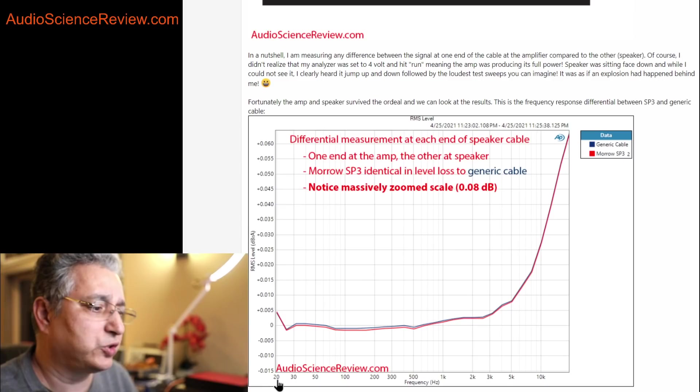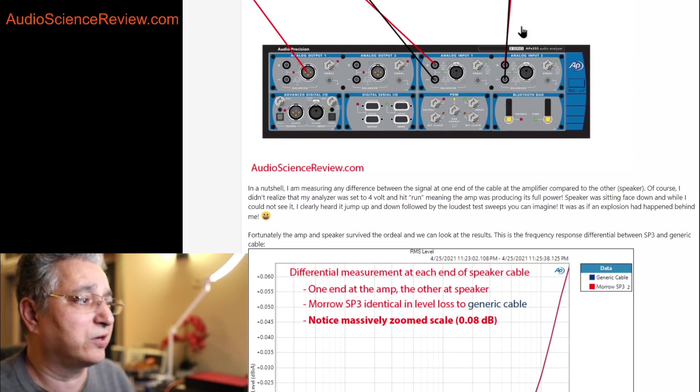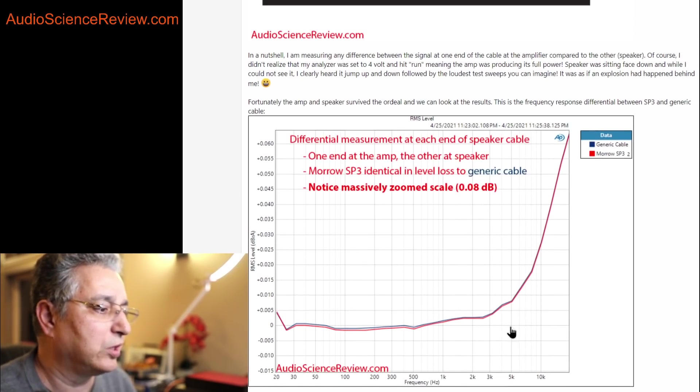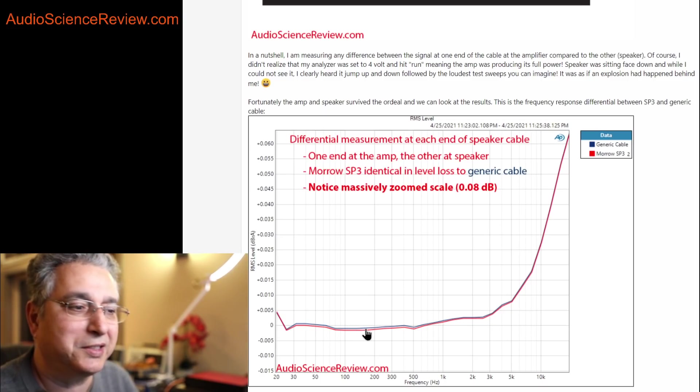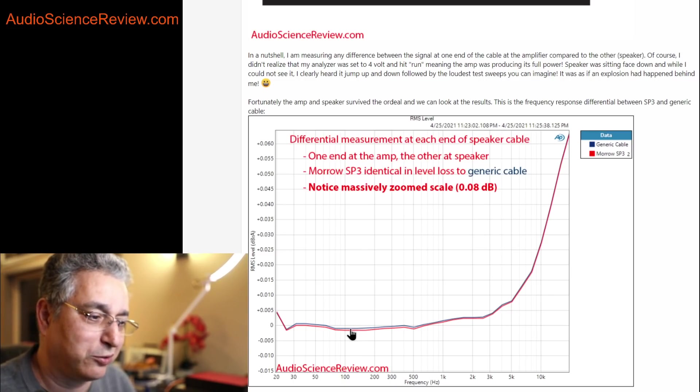So I now ran a sweep instead of just one tone, 20 hertz to 20 kilohertz, and this is what the difference looks like. Now, don't worry about the shape of this graph in that the losses seem to increase as you go to higher frequencies. There are testing errors due to the cables I'm using and so forth. So all we care about in here is the difference between a generic cable and the expensive cable, higher-end cable. And I've got both of those plotted and you can barely see them separated here. And you might say, okay, so there is some difference in here. No, there isn't. And if you look at the scale in here, this is in decibel. The lower scale is minus 0.015 dB, and the plus side is 0.06.